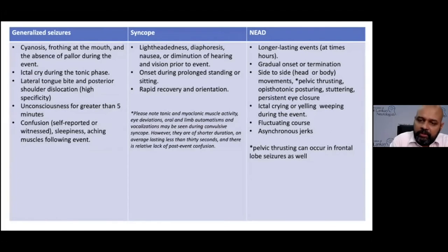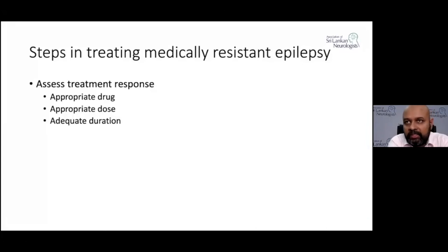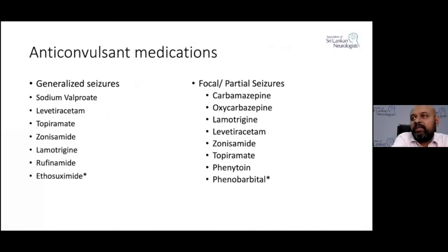Moving on: the first step is to decide whether this is true epilepsy. The second step is to assess whether the patient is on an appropriate drug in an appropriate dose and has been treated for an appropriate period of time. You need to classify seizures — whether this is focal onset, generalized, a combination, or an unclassified form of epilepsy — before deciding on whether the patient is on an appropriate treatment regime.